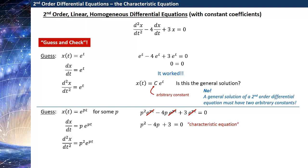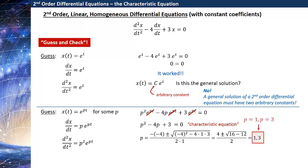This is called the characteristic equation for solving this type of differential equation. We can see this is going to give us two solutions — it's a quadratic equation for p. We can find those two solutions using the quadratic formula or whatever technique you prefer. And my p values that solve this are 1 and 3. So only certain values of p actually solve this differential equation when I take x of t as e to the pt: p equal to 1 and p equal to 3.